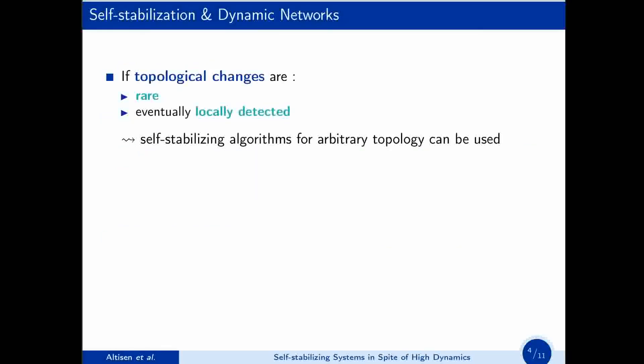So, what about self-stabilization in dynamic networks? Well, if topological changes are rare, and processes can eventually locally detect them, one can use a self-stabilizing algorithm designed for arbitrary topology. The system will recover after topological changes, just as after a transient fault.